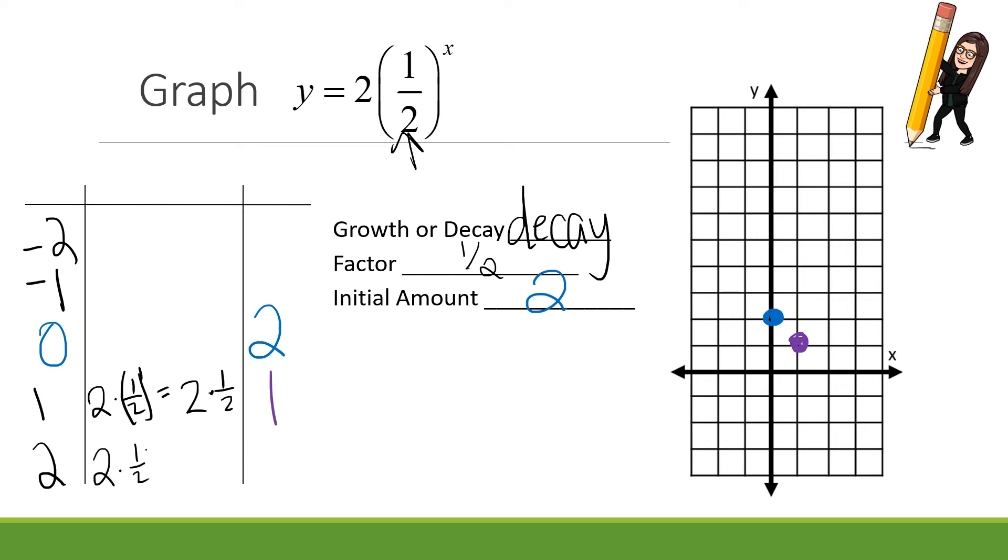2 times 1 half to the second. Well, that means I'm distributing that 2 to the top and the bottom. What's 1 squared? 1. What's 2 squared? 4. I'm going to make that initial 2 a fraction. How do I multiply fractions? Straight across. That gets me to 2 fourths, which is the same - you do have to reduce - 1 half. So at 2, I'm at 1 half. That makes sense, right? Your answer should make sense with the fact that it's decay.